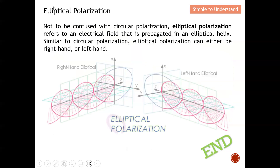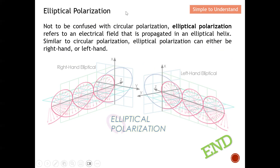Last but not least, let's briefly discuss elliptical polarisation. Earlier I mentioned circular polarisation where you have a circular shape. Elliptical polarisation does not have a circle shape — instead, the E-field is propagated in an elliptical shape. Similar to circular polarisation, we also have left-hand and right-hand elliptical polarisation. Based on the flow of the E-field, we can conclude whether it is left-hand or right-hand, depending on the orientation of the electric field. Remember, we always focus on the electric field only.